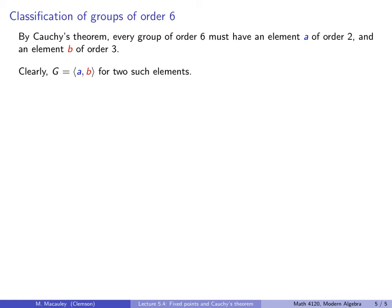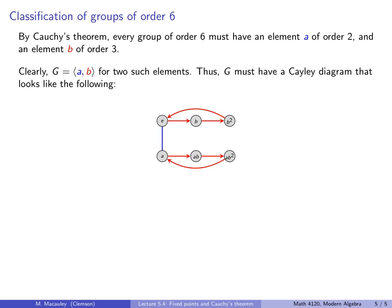Clearly, G is generated by this a and b. But why? There just aren't that many elements. There's only six of them. If you don't believe me and you want a picture, well, here you go. G must have a Cayley diagram that looks like the following.